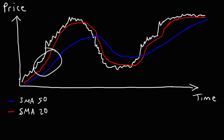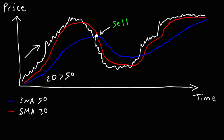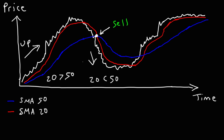In this region, the red line is above the blue line — the SMA 20 is above the SMA 50 — which means the stock is in an uptrend. Here we have a crossover, when the SMA 20 crosses the SMA 50, which is another way to identify a trend reversal — in this case, a signal to sell. In the next region, the red line is below the blue line, so the SMA 20 is less than the SMA 50, indicating a downtrend. Then at the next crossover, that is a buy signal.